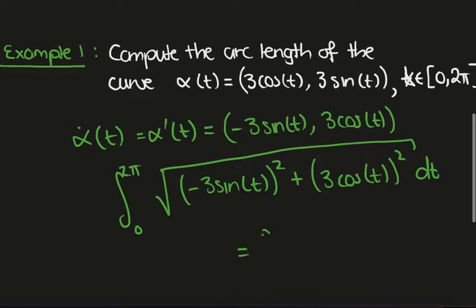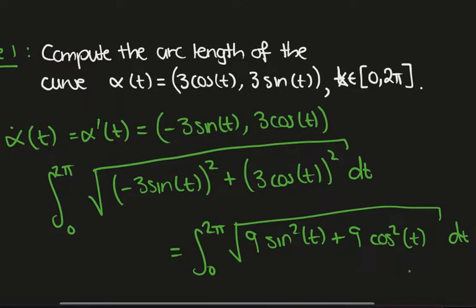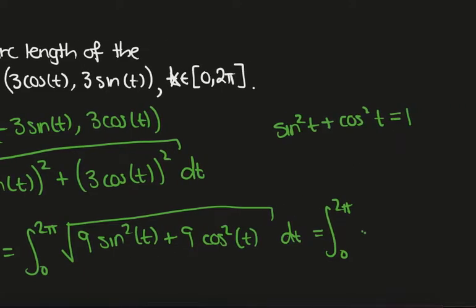This is the integral from 0 to 2π of the square root of 9sin²(t) plus 9cos²(t) dt. And then we use the Pythagorean identity, which says that sin²(t) plus cos²(t) equals 1. So in particular this is just the square root of 9 dt.